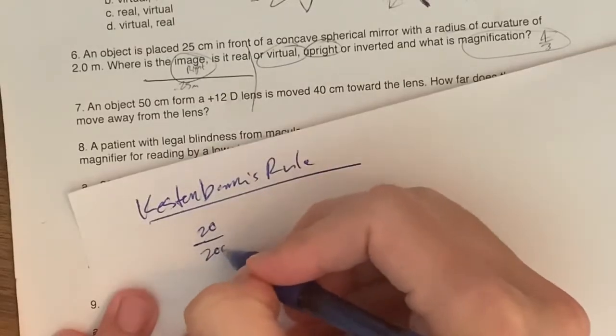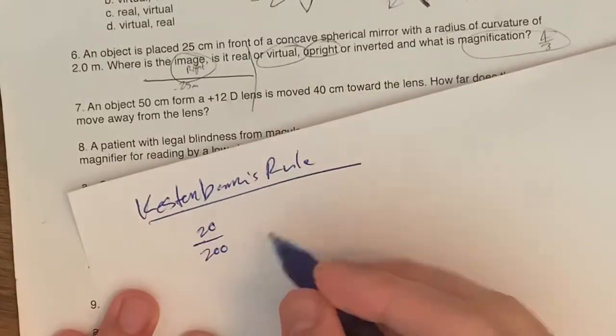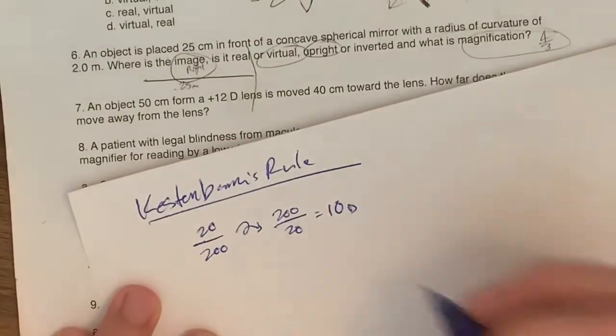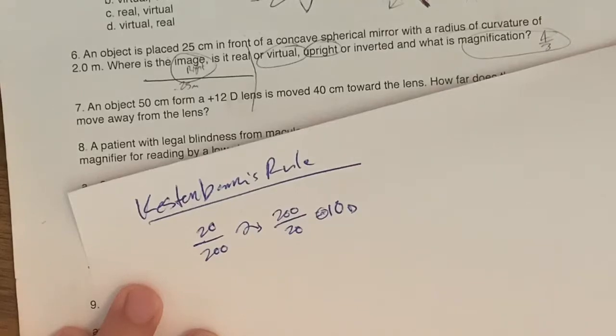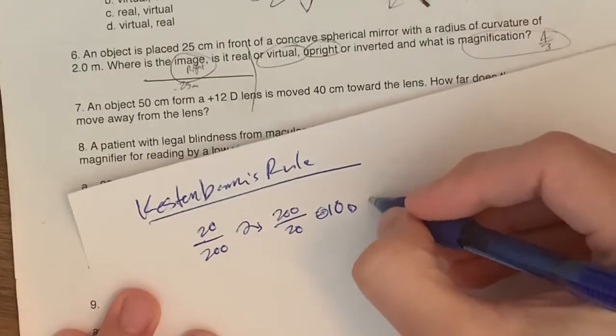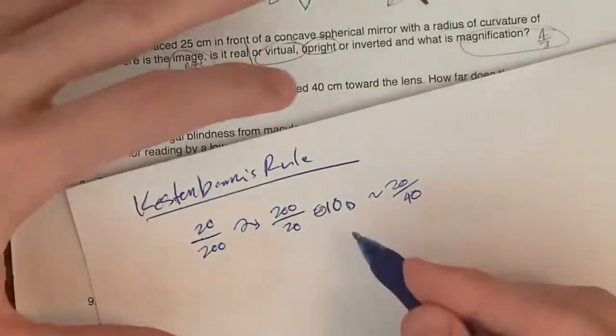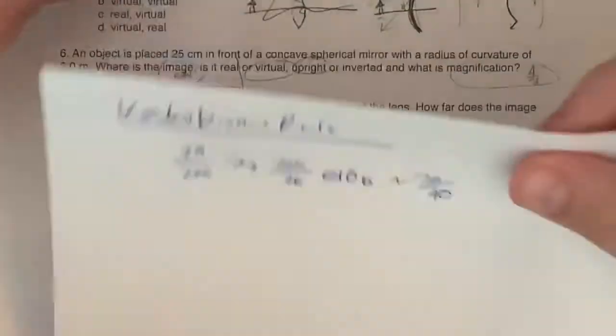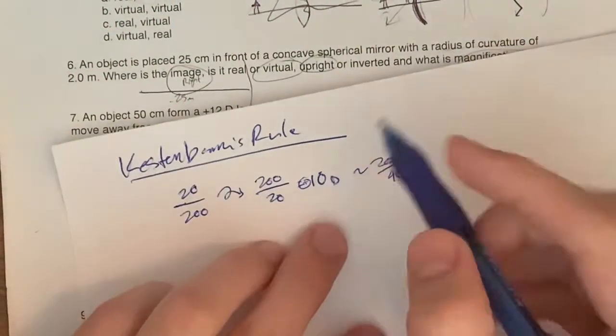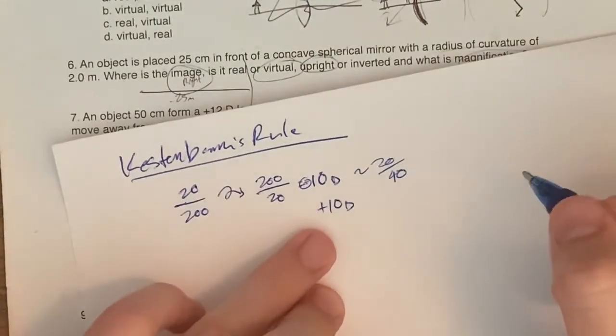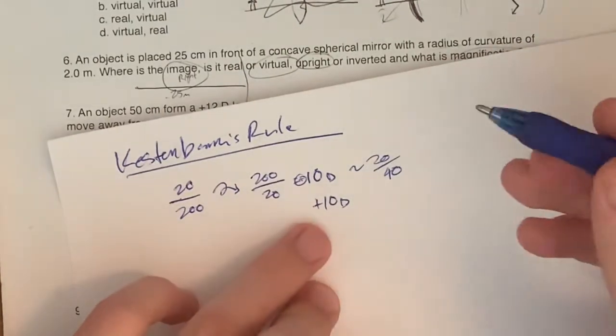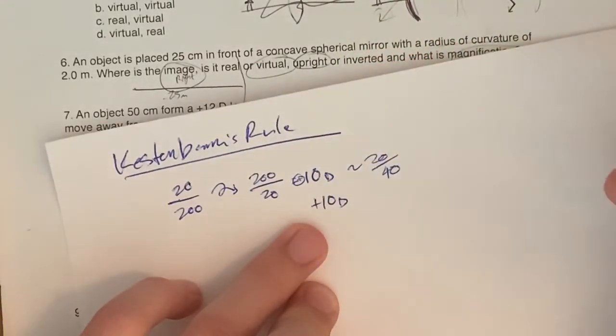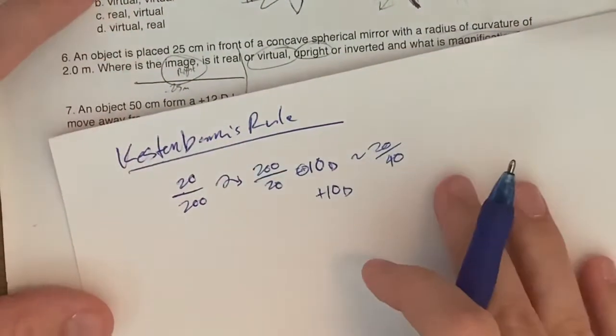I'll show you by an example how this works. If you imagine someone with poor vision, let's say they're 20/200, Kestenbaum's rule says that if you take the inverse of this, 200 divided by 20 equals 10, then a 10 diopter lens will give you around 20/40, 20/50ish vision. If you take that 10 diopter lens and put it into a pair of glasses and then you hold whatever you're reading at the focal distance away.